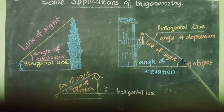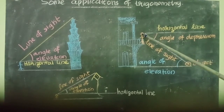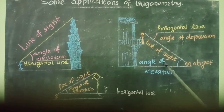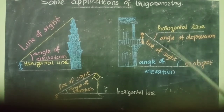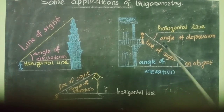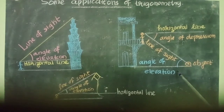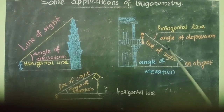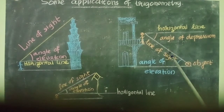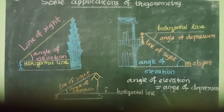Now you see this figure again. Suppose the observer is here and the object is above the horizontal line — this marked angle will be the angle of elevation and this line will be the horizontal line. Now, what about this horizontal line and the other horizontal line? These two lines will be parallel. So what is the relationship between the angle of depression and the angle of elevation? They will be alternate interior angles. We know that if the lines are parallel, alternate interior angles are equal. Therefore, the angle of elevation will always be equal to the angle of depression.